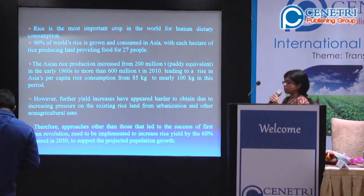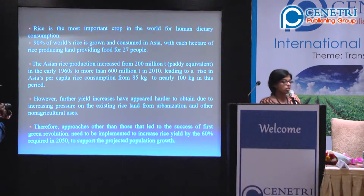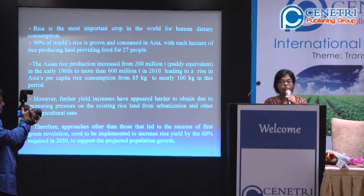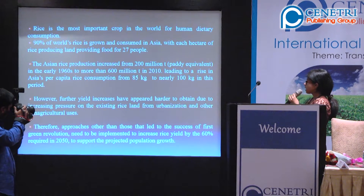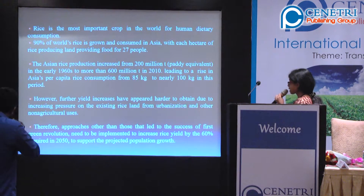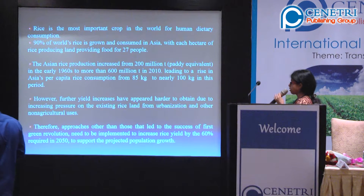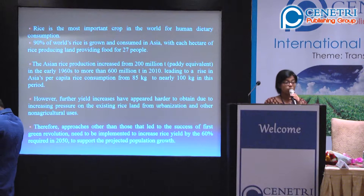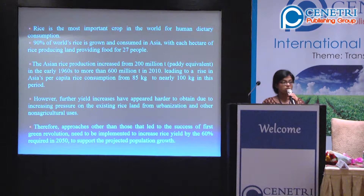But then natural resources started depleting. There was further climate change, because of which the further increase in rice yield came to a standstill. As it has been predicted that by the year 2050 the population is going to increase dramatically, it would be next to impossible to feed this rapidly growing population if we do not make efforts to improve crop yield.